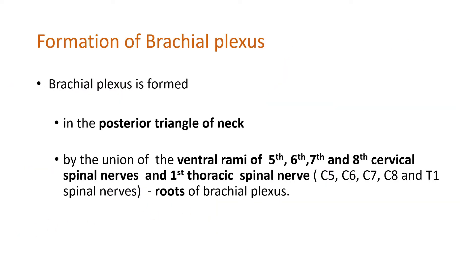Brachial plexus is formed in the posterior triangle of the neck by the union of ventral rami. This is very important to remember — ventral rami — because all plexuses in the body, whether cervical, brachial, lumbar, or lumbosacral, are all formed from ventral rami. The whole of the anterior aspect of the trunk as well as the upper and lower limbs are always supplied by ventral rami.